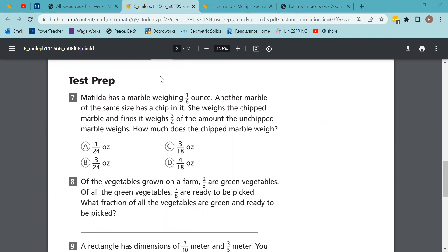Matilda has a marble that's one-sixth of an ounce. Another one is the same size but has a chip in it. She weighs the chipped marble and finds that it's three-fourths of the amount of the unchipped marble. How much does the chipped marble weigh? One-sixth of three-fourths - they don't simplify, so one times three is three, six times four is 24. Simplified though, it would be one-eighth of an ounce.